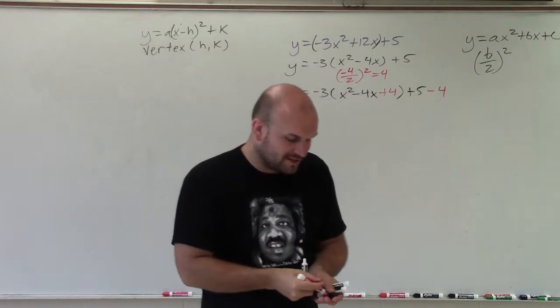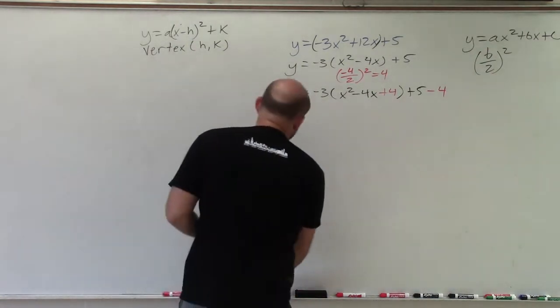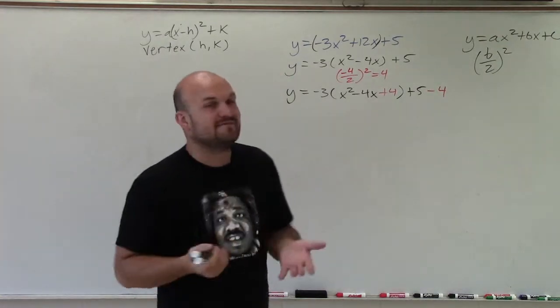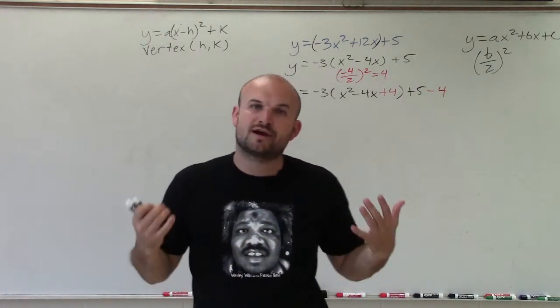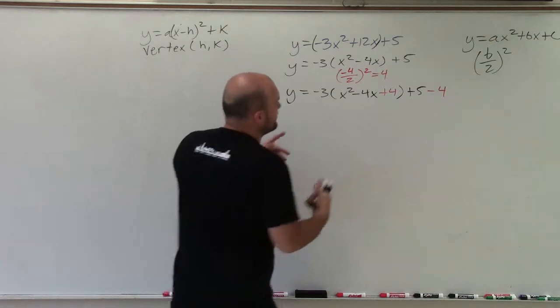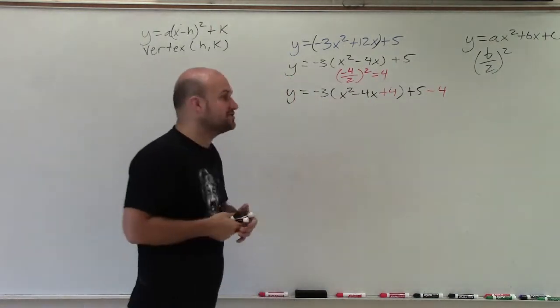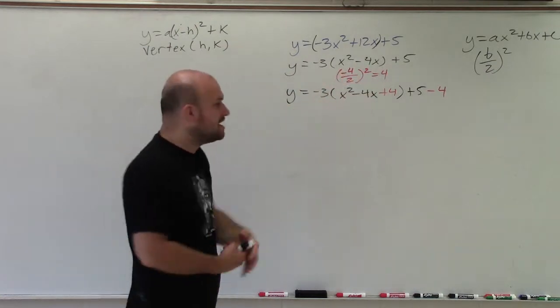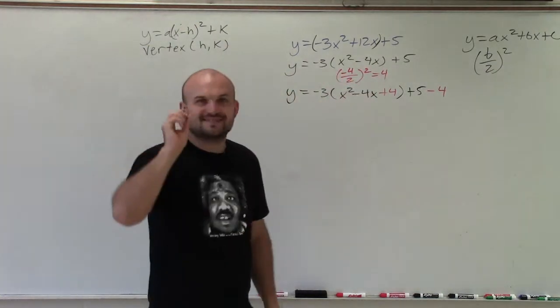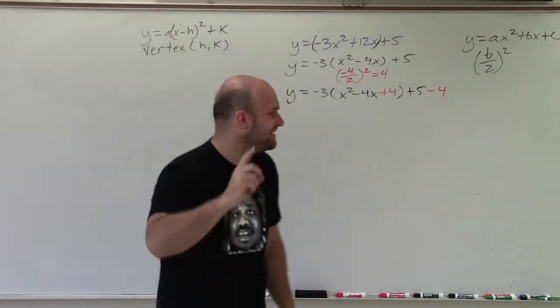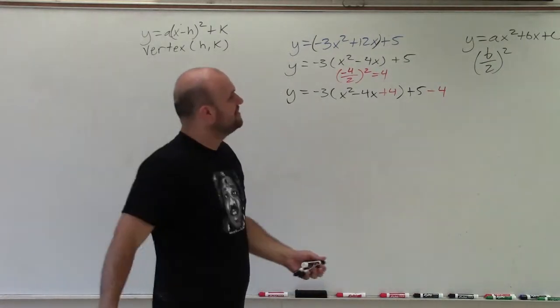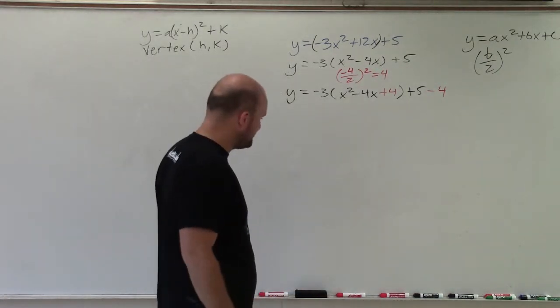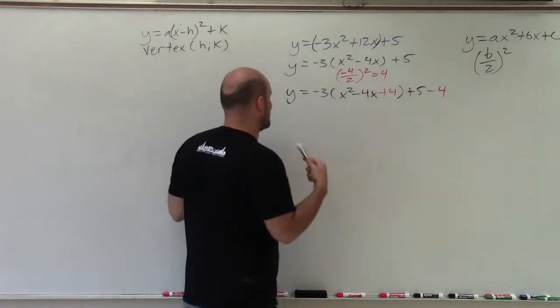Now, what's important about this is by taking b divided by 2 squared, I have now created a perfect square trinomial. And what's nice about a perfect square trinomial is it can be factored to a binomial squared, which is a binomial times itself. So now, I made the big mistake. I was thinking about doing it, but... not there yet. Sorry, I got a little ahead of myself.